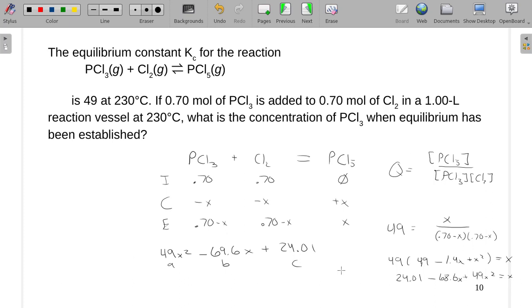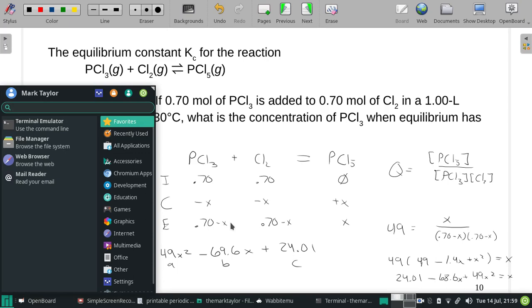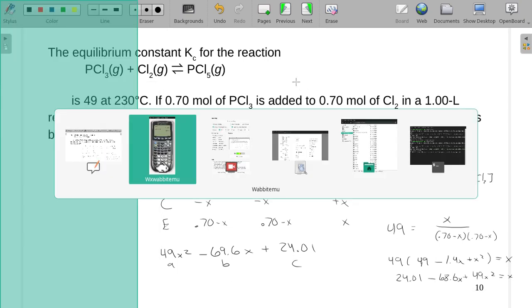And in this case, the X is not our answer. We'll have to do 0.7 minus our X. So let's get what our X is real quick.